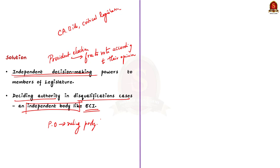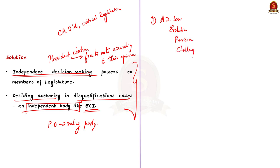These are the two solutions which, if implemented, could solve the problems. In this discussion, we saw about the anti-defection law, its evolution, its provisions, grounds for disqualification, challenges associated with it, and solutions to these problems. Now let us move on to the next article discussion.